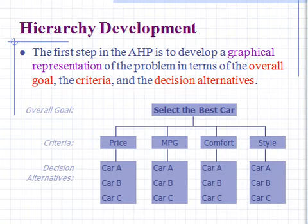The first step is to develop a graphical representation of the problem in terms of the overall goal. Our goal here is to select the best car. Second is criteria: price, miles per gallon, comfort, and style. Third is decision alternatives: car A, B, and C. So here I have three cars. This is the decision hierarchy for buying a car.